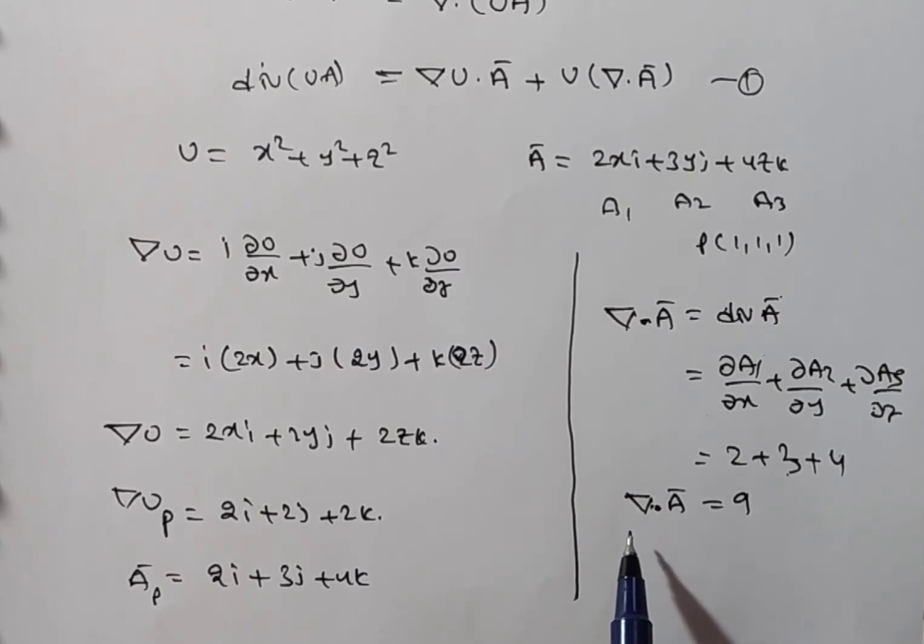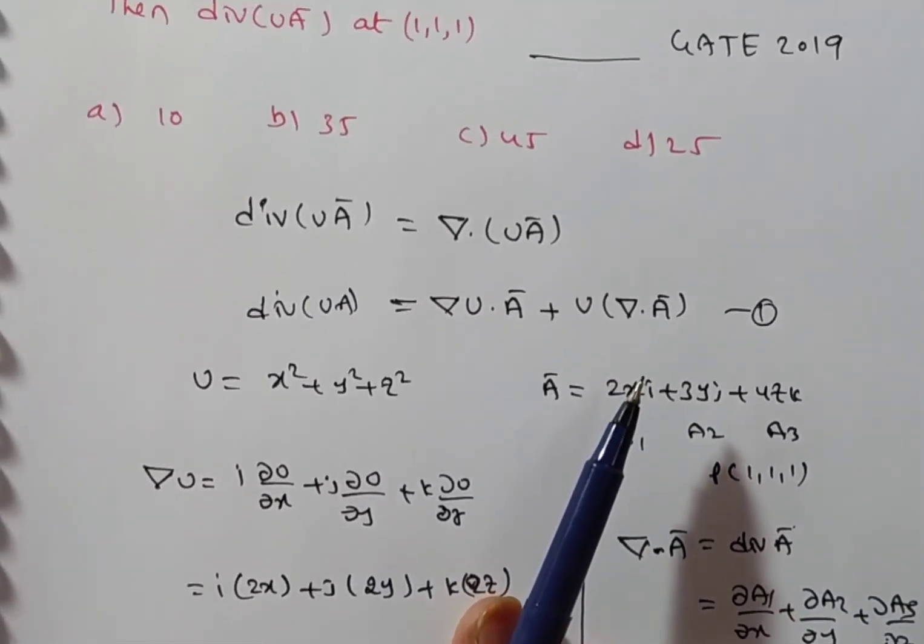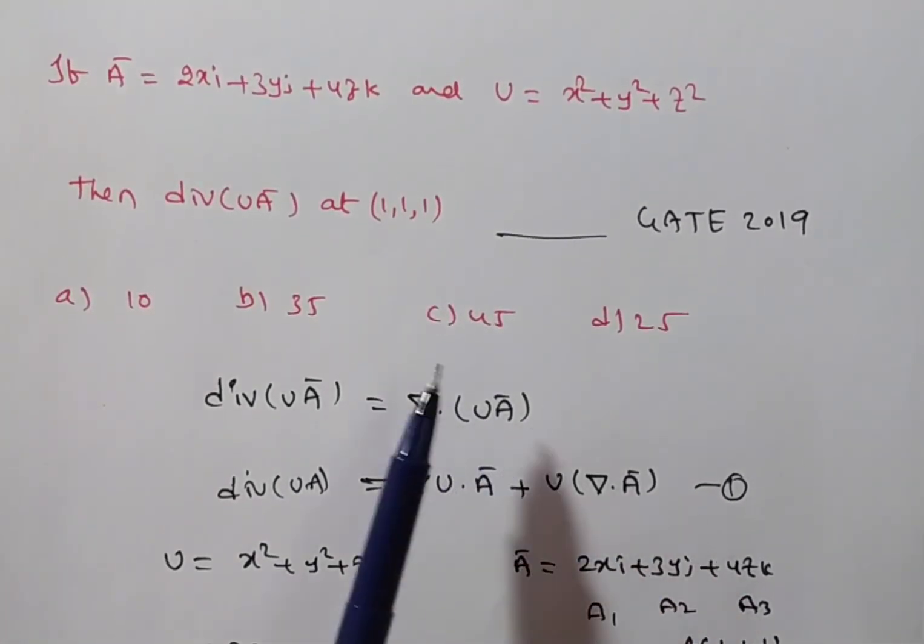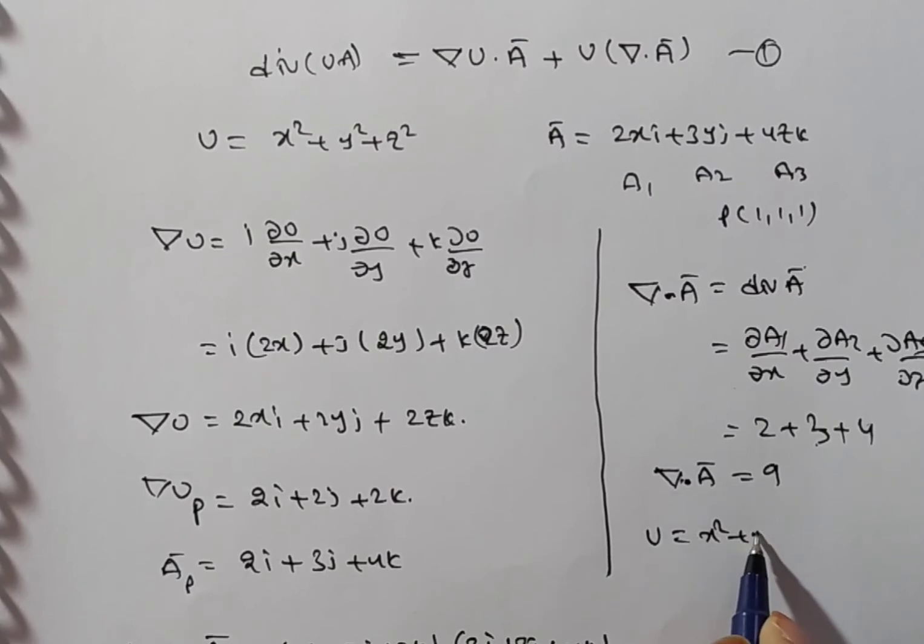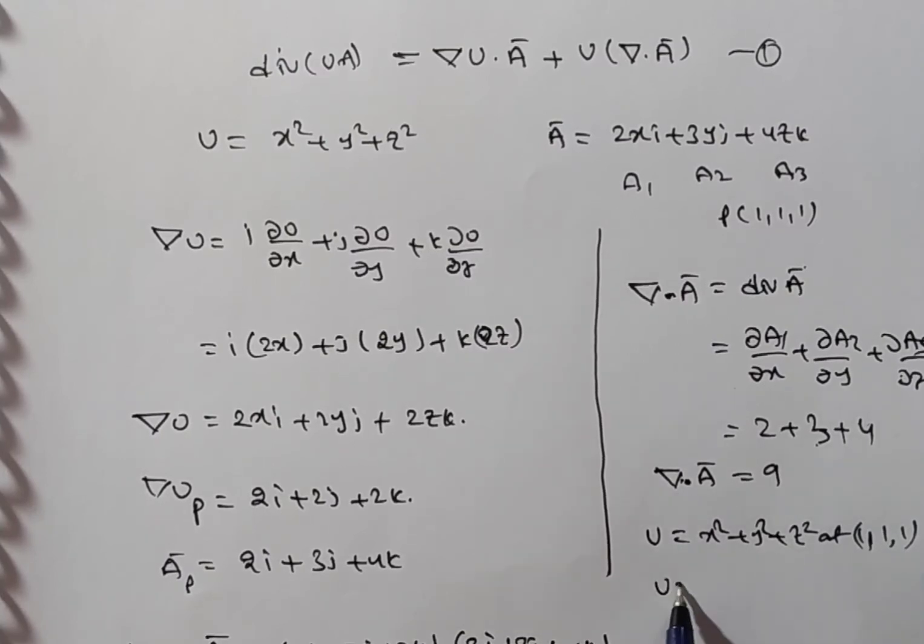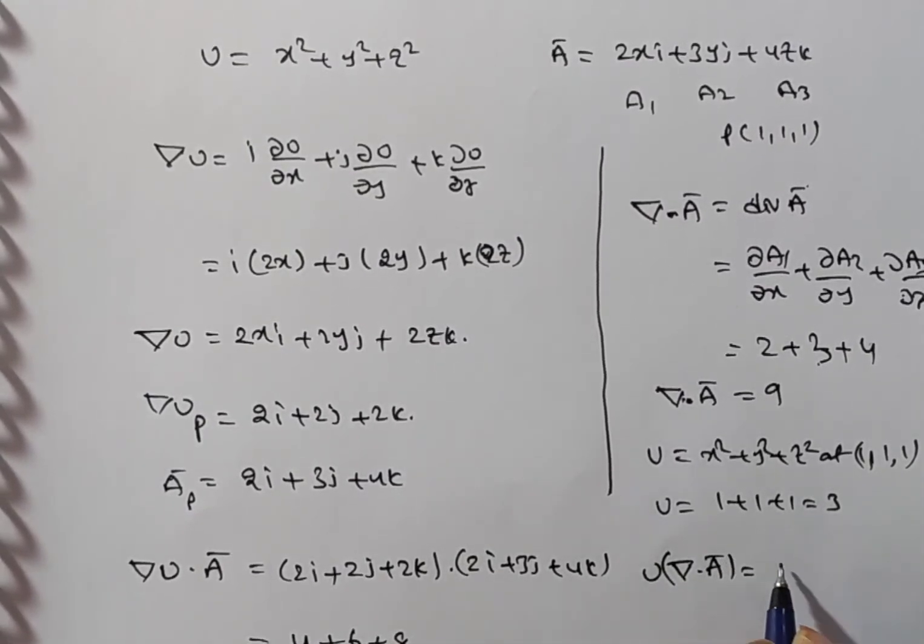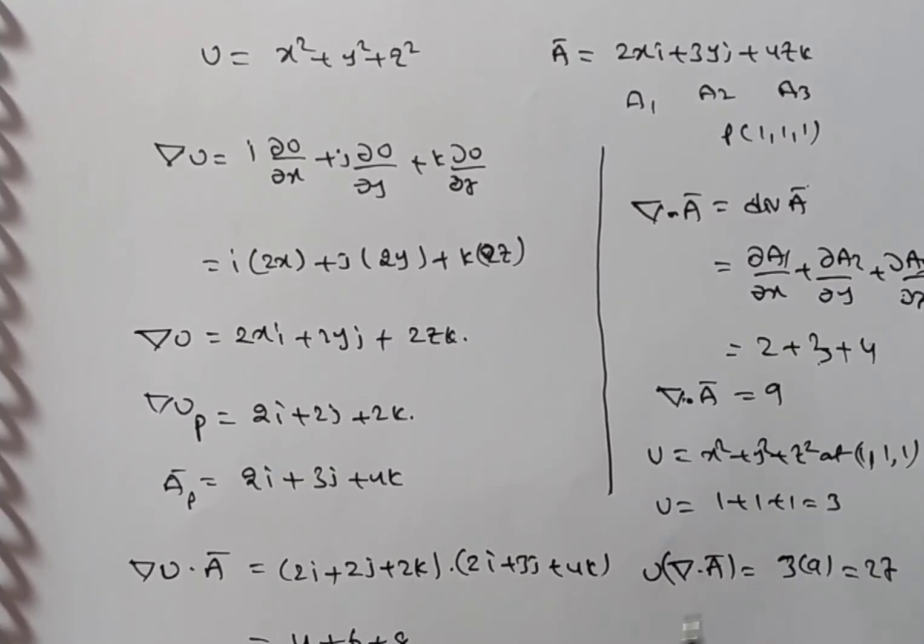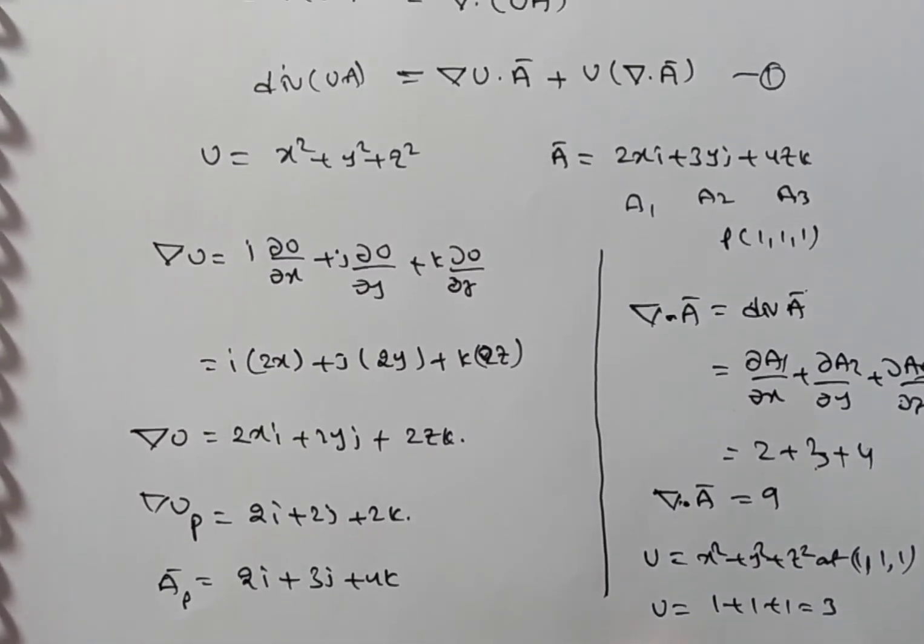You see, friends, del is a vector. A bar is a vector. So, vector dot vector is a scalar. Yes, this is also correct. Next, finally, what do you require to find? Multiply with u. u at where? At the point p 1 comma 1 comma 1. u is x square plus y square plus z square. At 1 comma 1 comma 1 is how much? u is equal to 1 square plus 1 square plus 1 square is nothing but 3. So, u into del dot a bar is equal to 3 into 9. That is 27. Now, this 18, you have here 18 and 27. These two values you substitute in equation number 1.